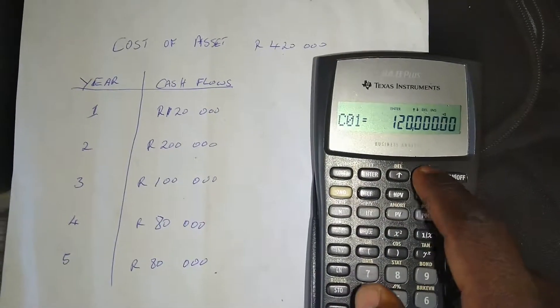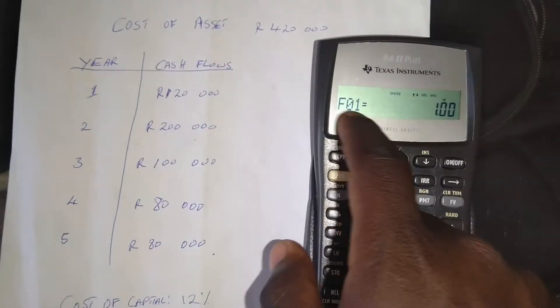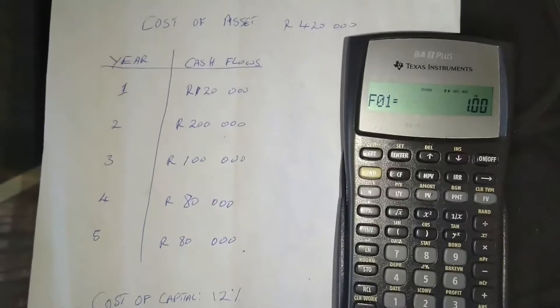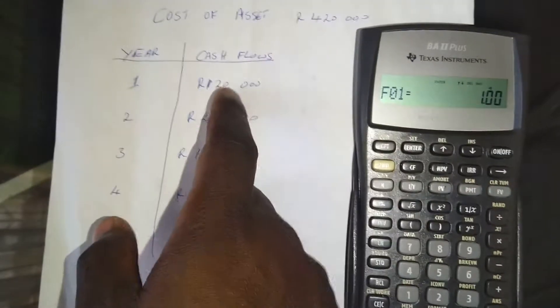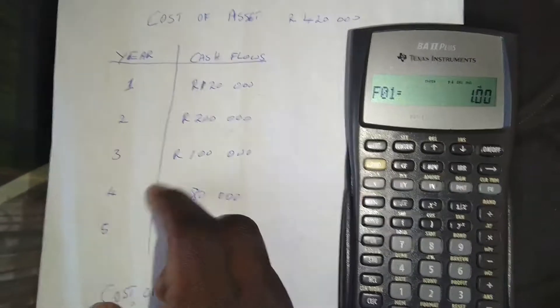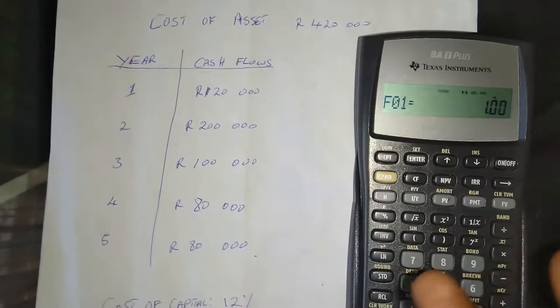And then we press the down arrow again. And you can see after we press the down arrow, it's going to show us the frequency of cash flow. So it's asking us how frequent is this cash flow occurring in a row. In other words, we have the same cash flow in year two, and so forth. So if 120,000 rand occurred in year two again, we'd press the frequency of cash flow is two.